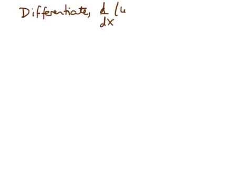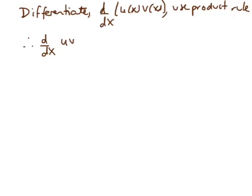I'll write it out explicitly: d by dx of the product u(x) times v(x). I'm going to use the product rule and be not very explicit about the x-dependence, but please do remember that u and v are both functions of our variable. So therefore, the derivative of u times v is going to be u prime times v, plus u times the derivative of v, which I'm writing as v prime.